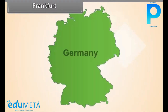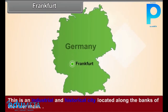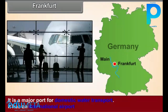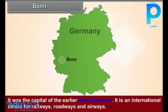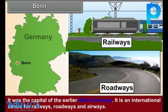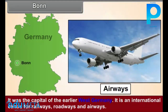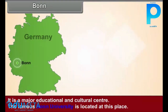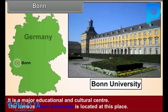Frankfurt. This is an industrial and historical city located along the banks of the river Main. It is a major port for domestic water transport and has an international airport. It was the capital of the earlier West Germany. It is an international center for railways, roadways, and airways, as well as a major educational and cultural center. The famous Bonn University is located at this place.